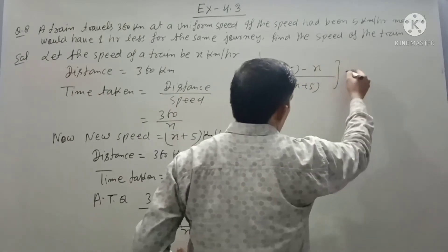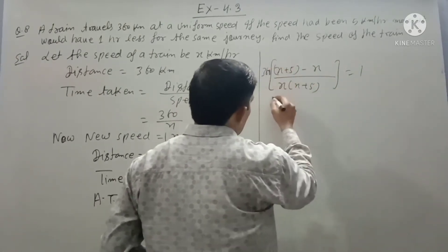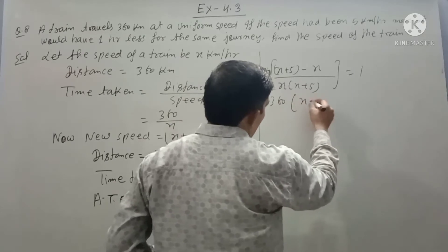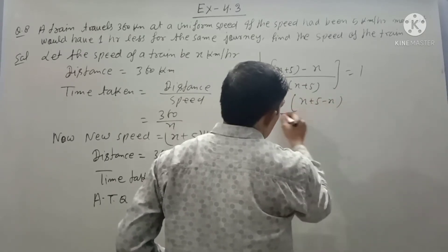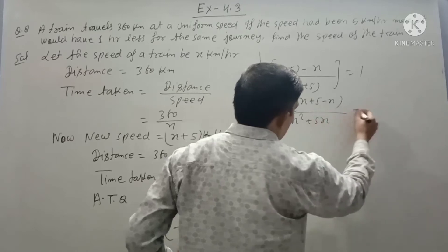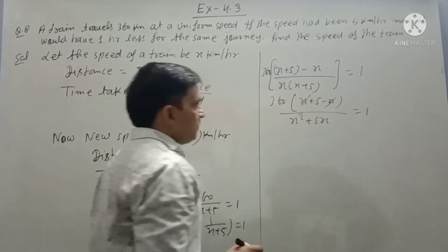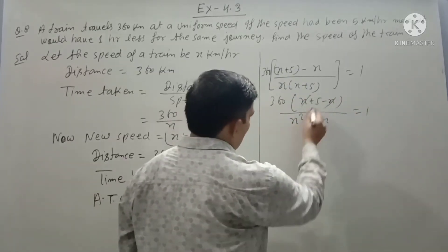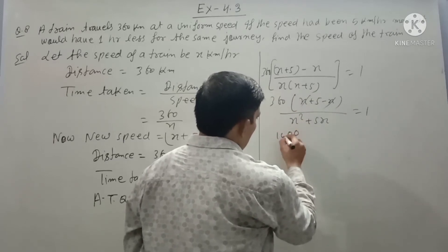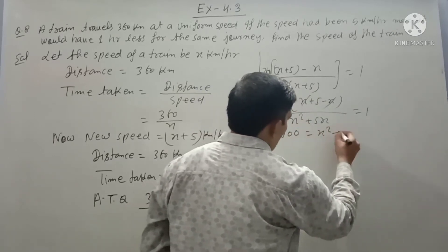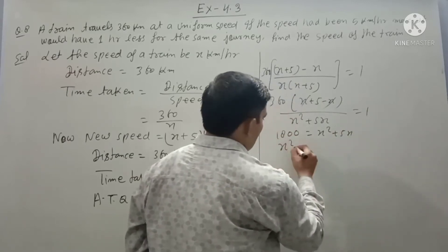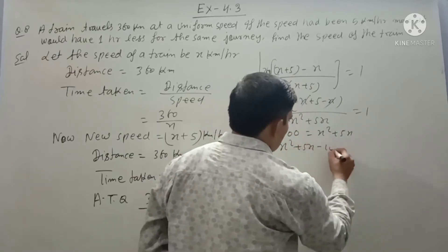Simplifying: 360 times (x plus 5 minus x) upon x(x plus 5) equals 1. That gives 1800 upon x squared plus 5x equals 1. Cross multiplying: 1800 equals x squared plus 5x. So x squared plus 5x minus 1800 equals zero.